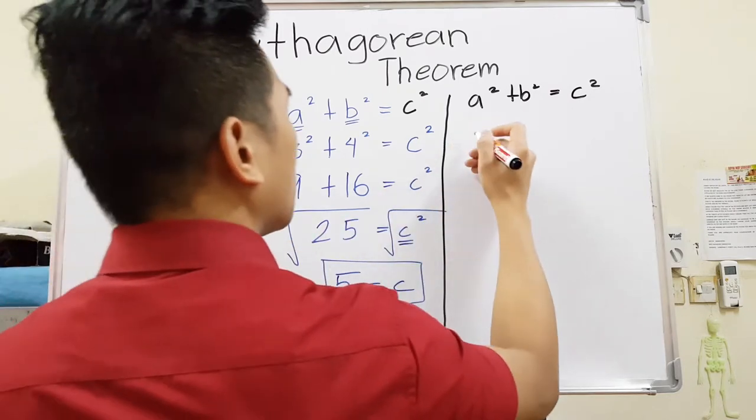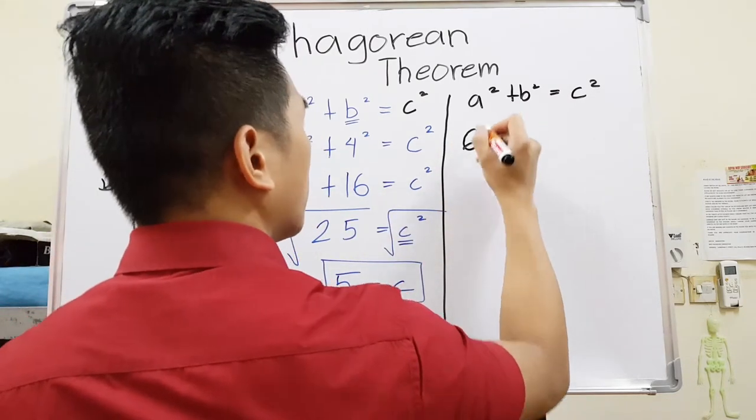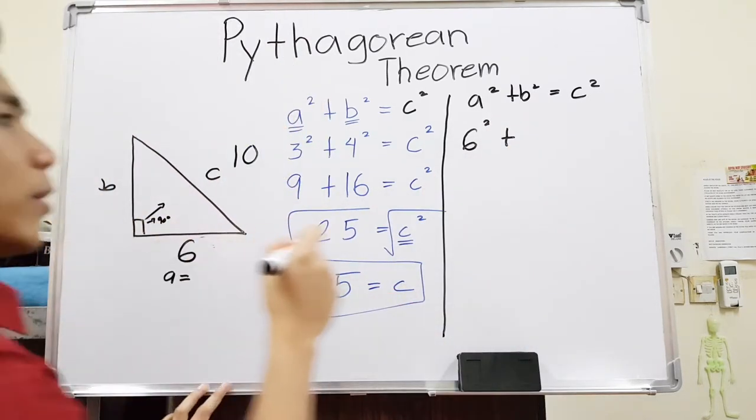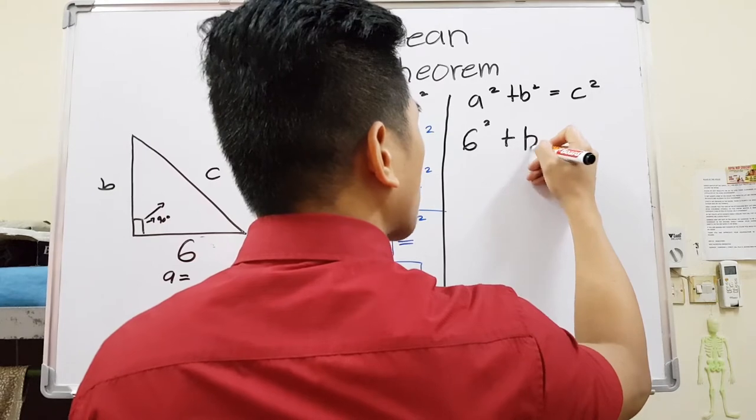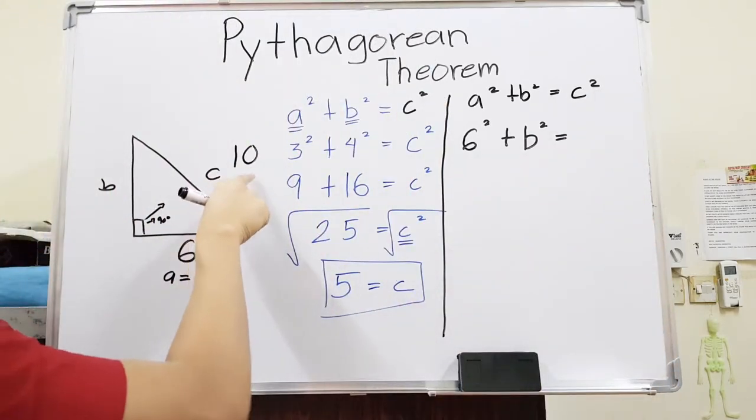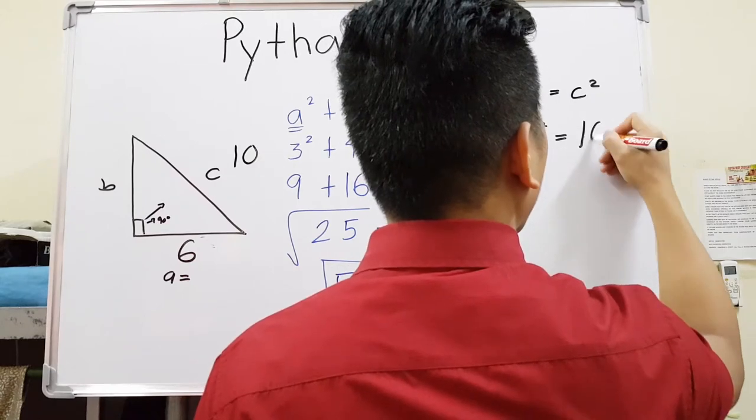What is our A? 6. So literally replace A by 6. So 6 squared plus, do I have my B? No, I don't have my B, so I'll just write B squared because I don't have it. C, do I have my C? Yes, I have 10. So 10 squared.